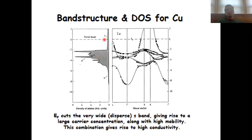You see that the density of states for the s band is very small, because the s band is very wide. Now you can see that the Fermi level actually cuts through that very wide s band, and that can serve as the qualitative explanation why the electronic conductivity in copper is that high.